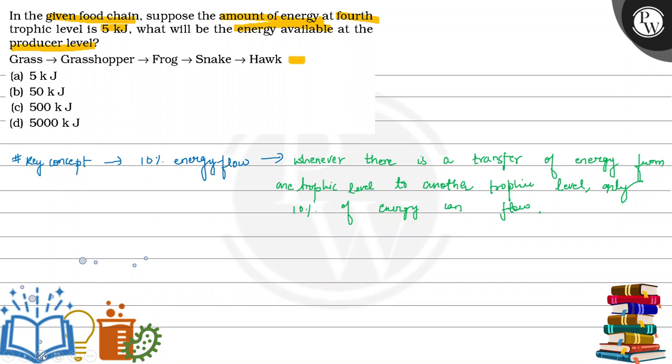In the given food chain, we will apply it. At one trophic level, only 10% of energy flows, then to the second trophic level grasshopper, third trophic level, fourth trophic level. The fourth trophic level is 5 kJ. When the energy flows in the food chain, it will be added to consumers.